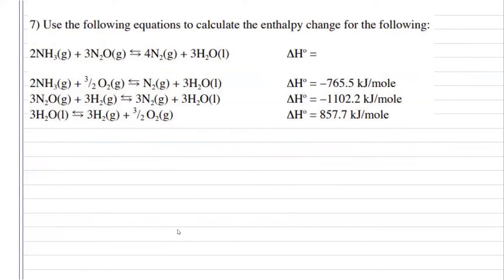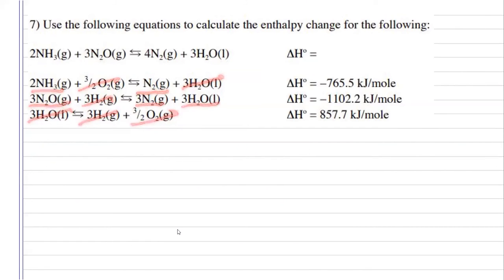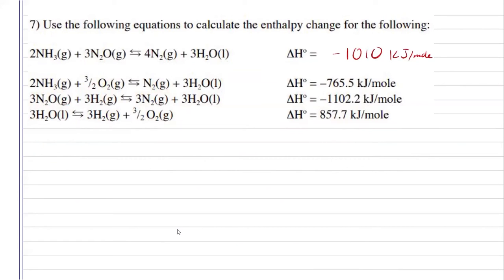For number seven, let's see what we can do. I have three hydrogens there — those will cancel. I have three oxygen molecules that will cancel. Three waters will cancel. So then all I'm going to be left with is two moles of ammonia, three moles of dinitrogen oxide, four moles of nitrogen, and three moles of water. That's exactly what we need. So I can just add up my enthalpies to get my final one to be negative 1,010 kilojoules.